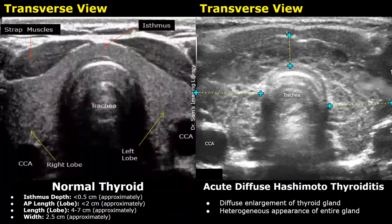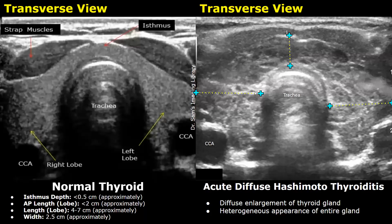We will compare the normal thyroid ultrasound image with Hashimoto's thyroiditis. This is the image of a normal thyroid in the transverse plane. The normal isthmus depth is usually less than 0.5 centimeters, the AP measurement of each lobe is usually less than 2 centimeters, the length of each lobe is between 4 to 7 centimeters, and the width is approximately 2.5 centimeters. In this next image, the patient had acute diffuse Hashimoto thyroiditis.